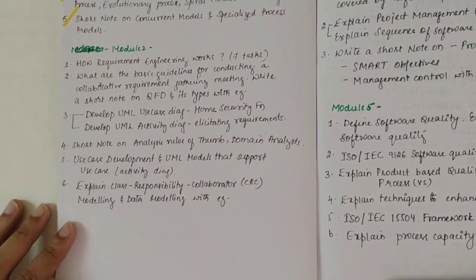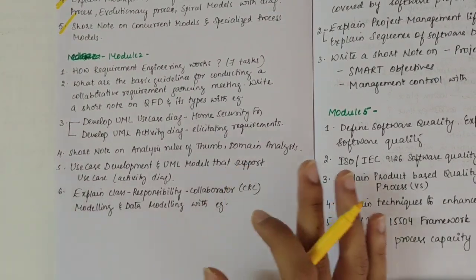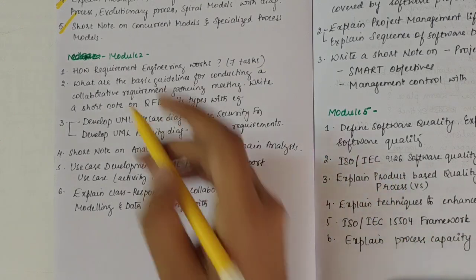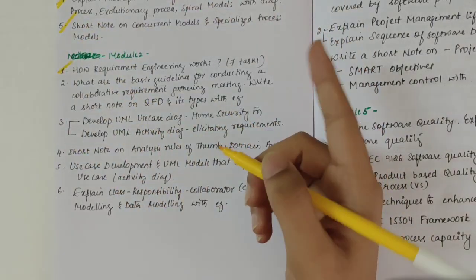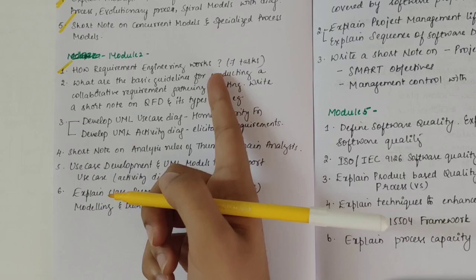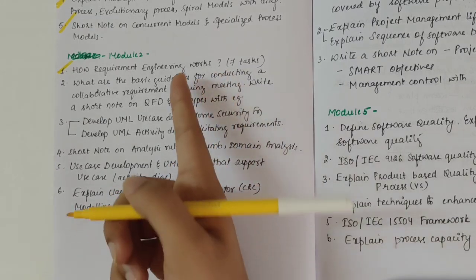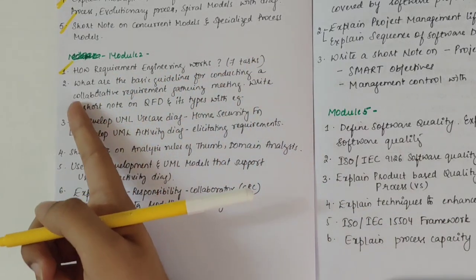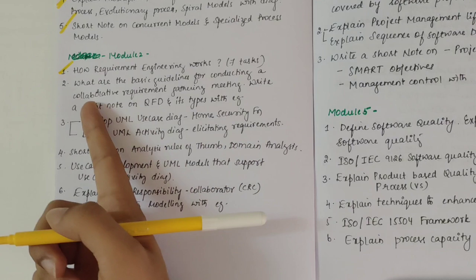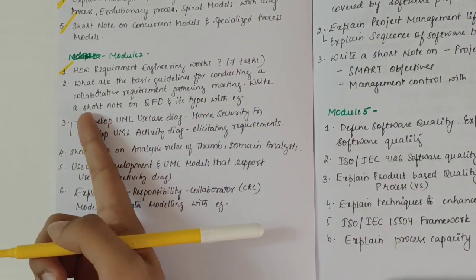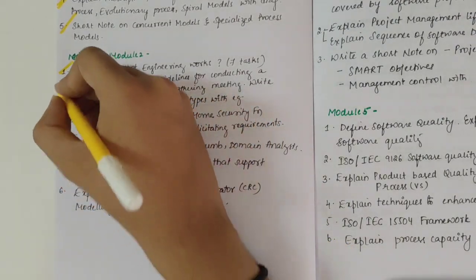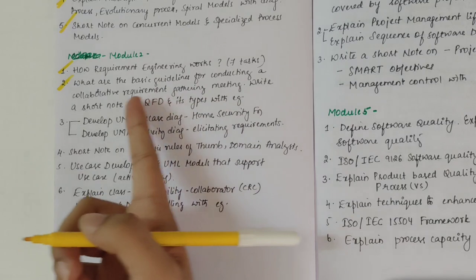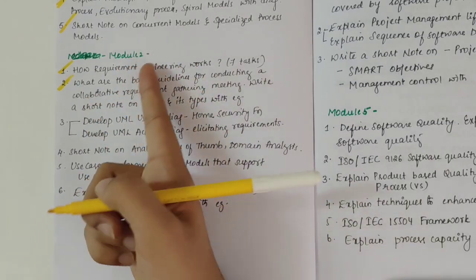Next moving on to module 2. We have requirement engineering - 7 tasks related to requirement engineering. This is a must question, could be asked for 10 marks because there is a lot to write. Then guidelines for conducting a collaborative requirement gathering meeting. Write a short on QFD and its types. This is important because it could be divided into 7 plus 3.